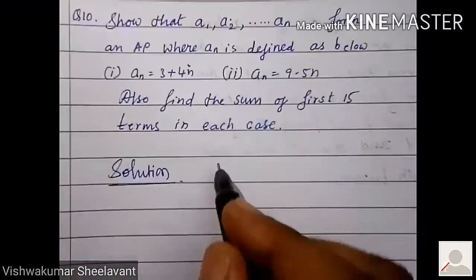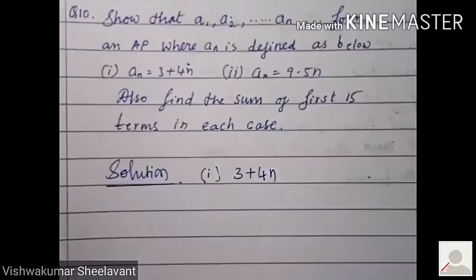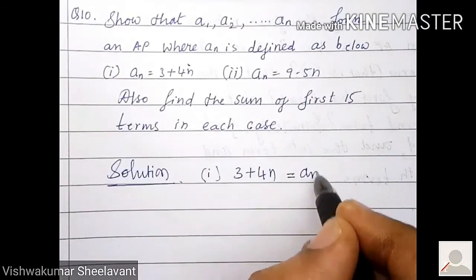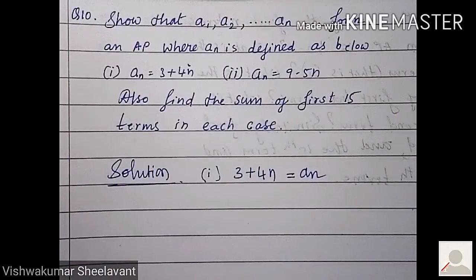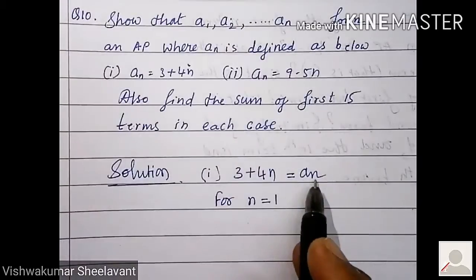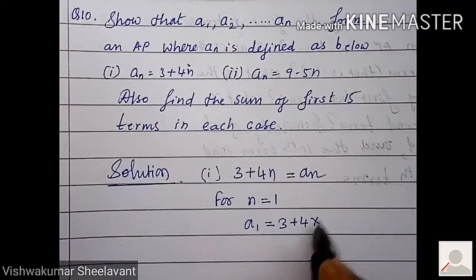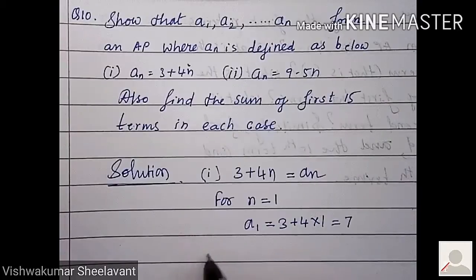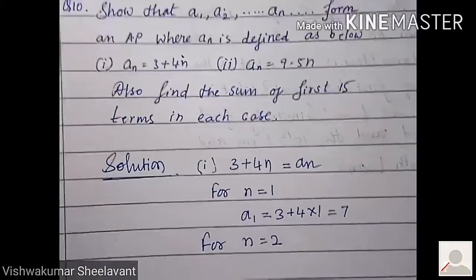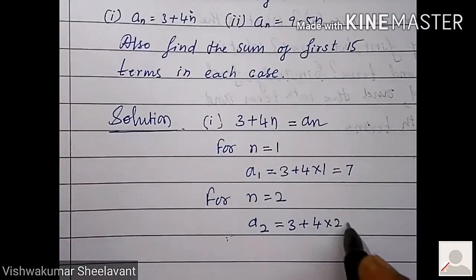Solution. First, an equal to 3 plus 4n is given. Very simple way: put n equal to 1 to 3. For n equal to 1, a1 is equal to 3 plus 4 into 1, that is equal to 7. Similarly, for n equal to 2, a2 will become 3 plus 4 into 2, that is 11.